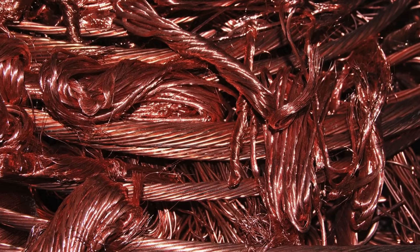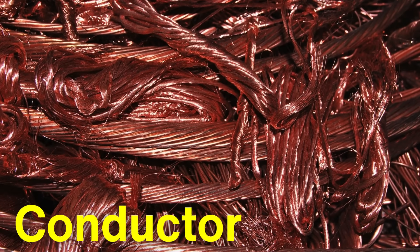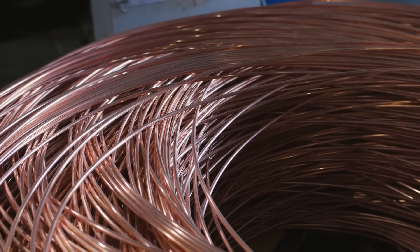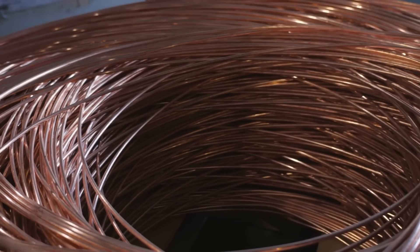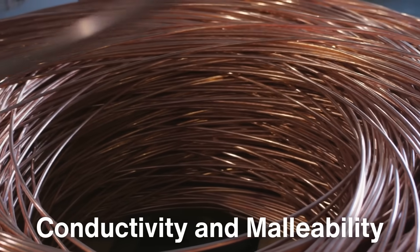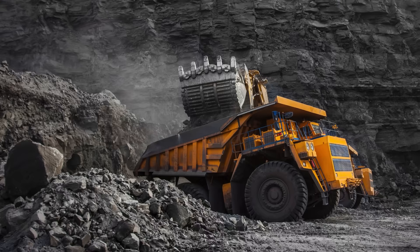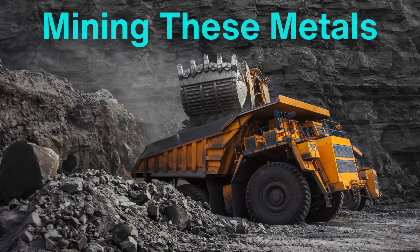The process begins with the core component: the conductor. Most insulated wires use copper or aluminum as the conducting material, with copper being the most common due to its excellent conductivity and malleability. The journey of wire production starts with mining these metals.